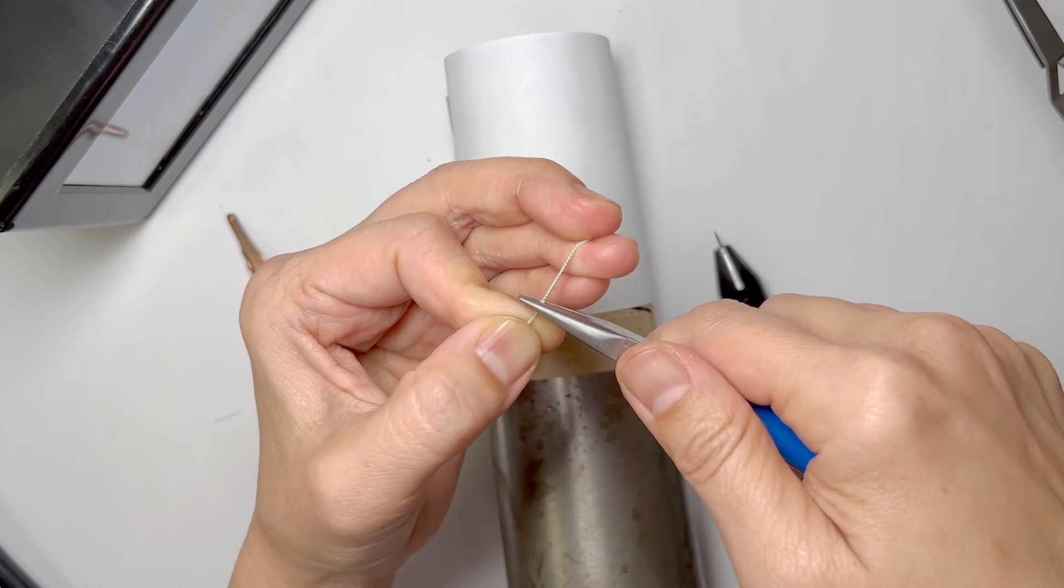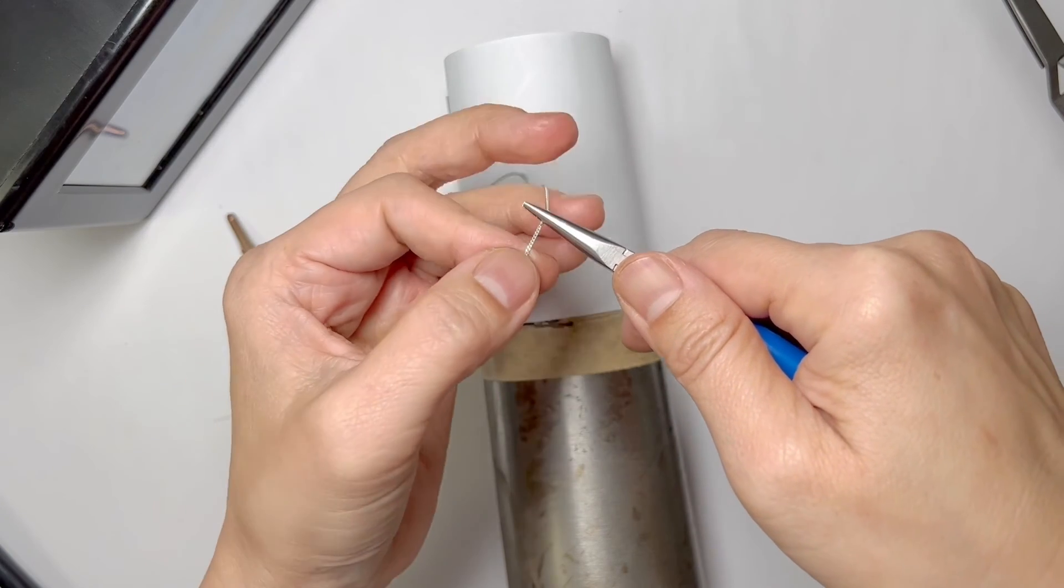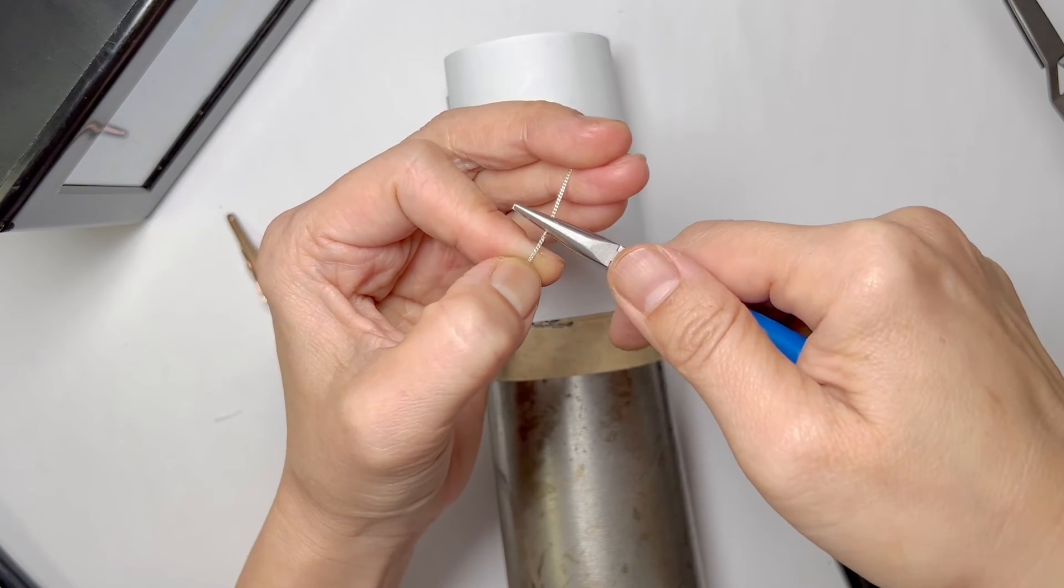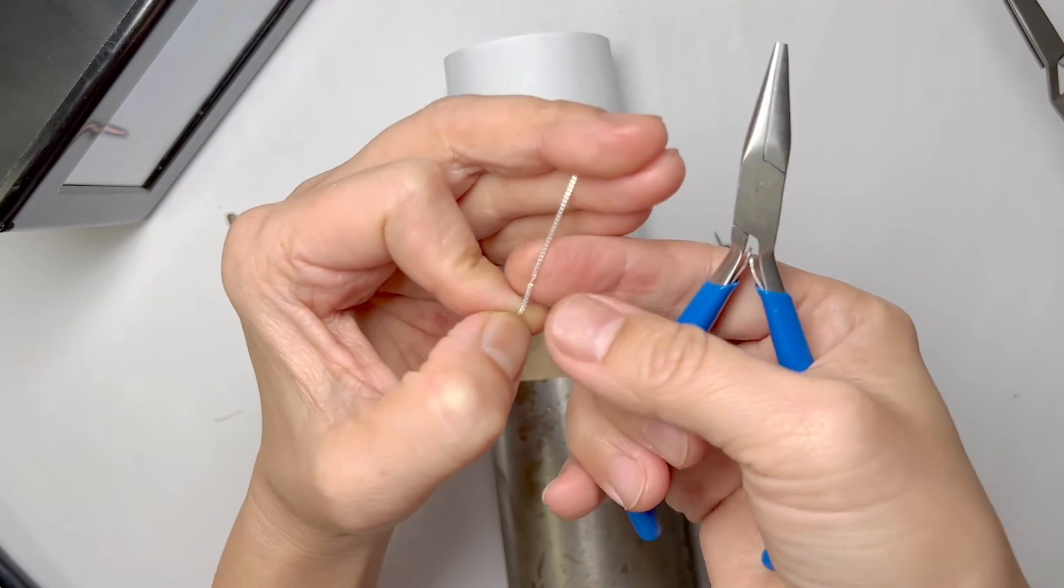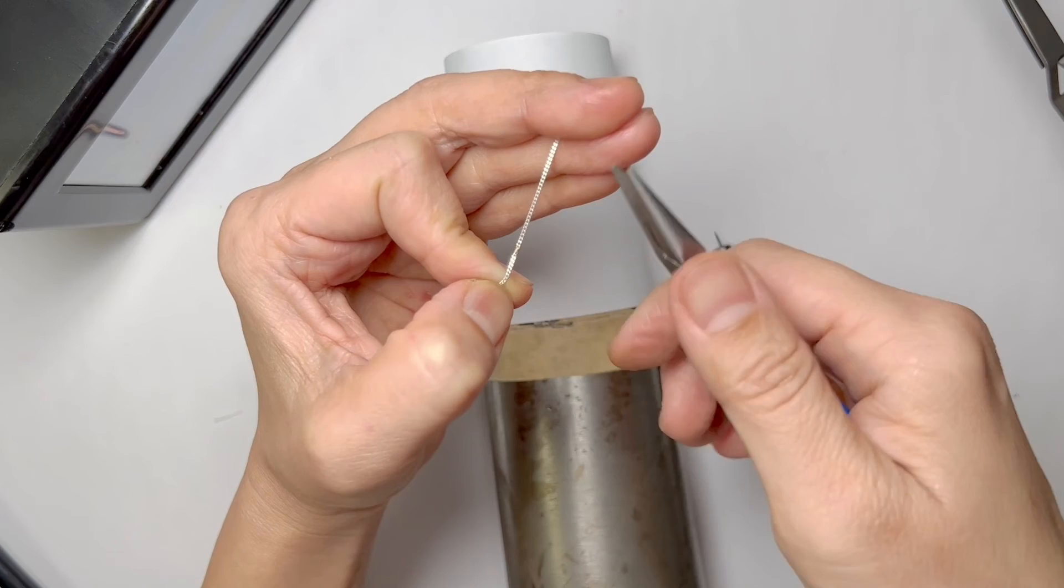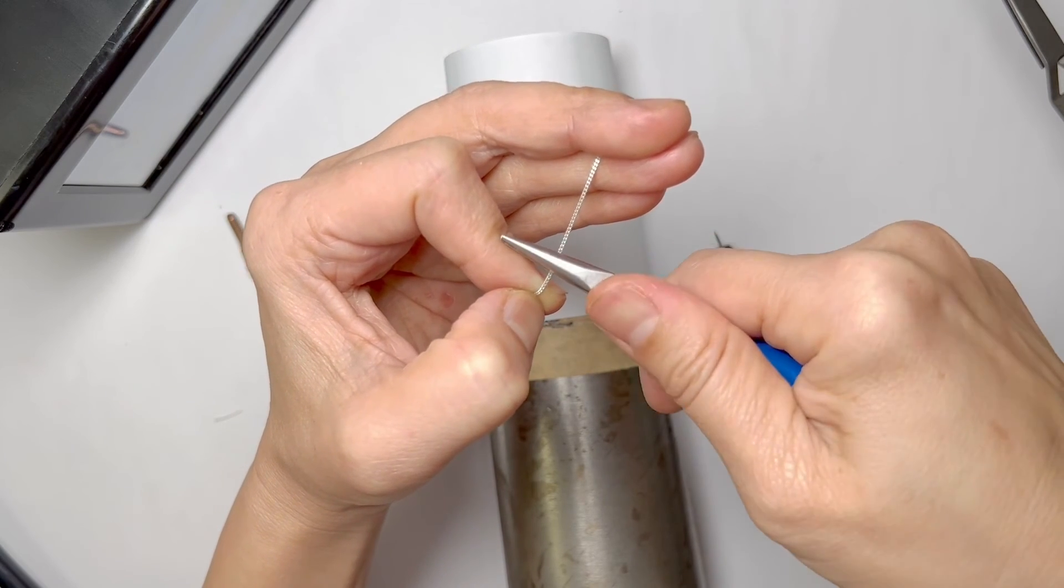What you do is you tap, tap, tap as you are rotating the chain, and that way it's even. And then if your chain is flat at the very end, you flatten it out like this.